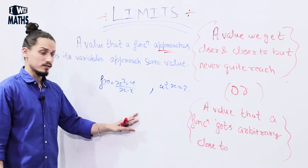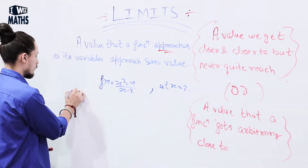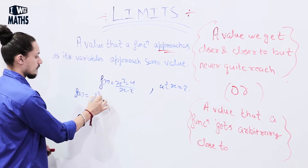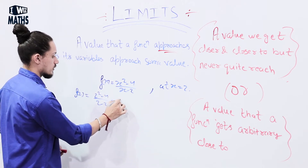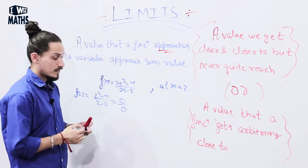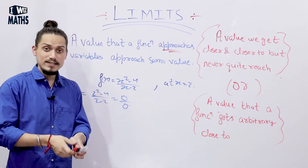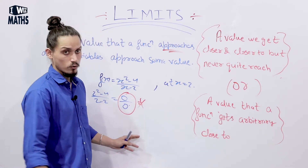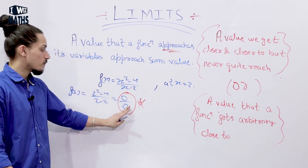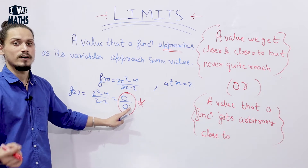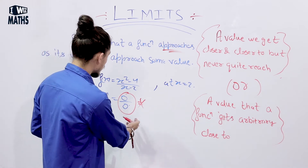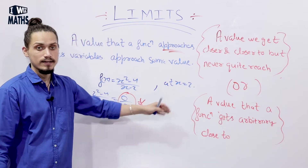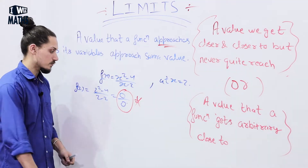Let's put this value directly. We get f(2) = (2² - 4) / (2 - 2) = 0/0. In this chapter we want to avoid this — 0/0 doesn't mean anything, it is called indeterminate form. So we don't get any result when we use this value directly. That's where limits come in.